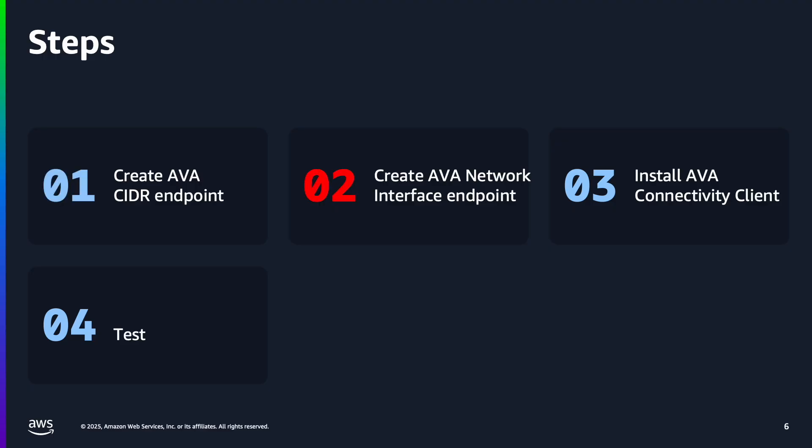Next, I will create a network interface endpoint. If you only want to expose a single resource through AVA, the network interface endpoint is a good option. Remember, you can choose to create a CIDR range endpoint, or the network interface endpoint, or both. You only need one endpoint to access FSx through AVA.